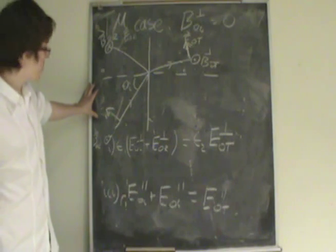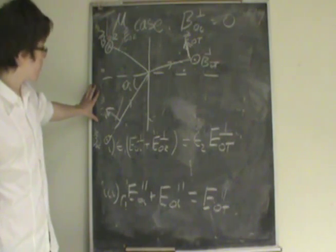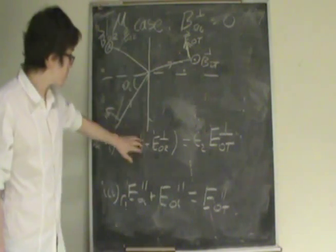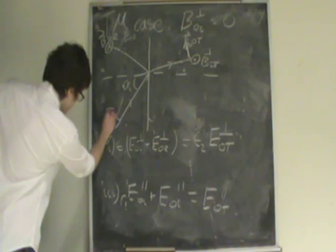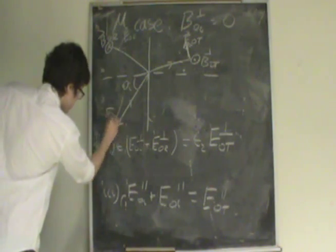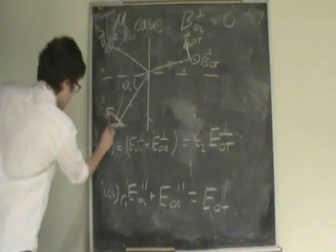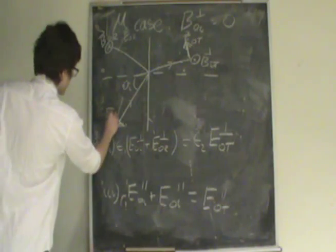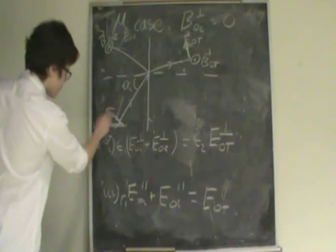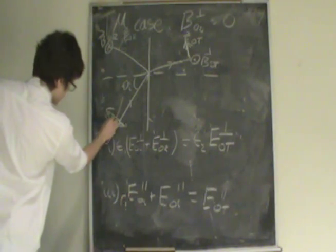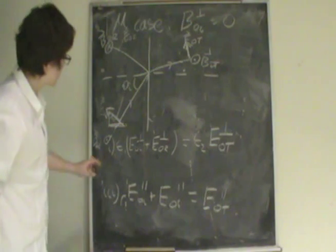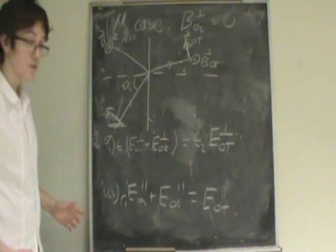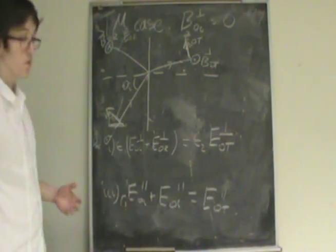As we did before, we're going to decompose the electric part of the wave into two different sections: the parallel to the plane of incidence and the perpendicular to the plane of incidence. We're going to use the angle of incidence in order to derive an equation with cosine and sine terms. The perpendicular components are going to be the sine terms, while the parallel components are going to be the cosine terms.